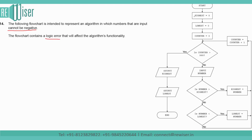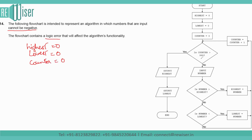After you start, you are assigning the value of the variable highest to 0. The variable for lowest is also 0 and counter is 0 — you are starting with 0 for all three variables. Now you're checking: is counter greater than 999? If it is greater than 999, then you are outputting the values of highest and lowest and ending.